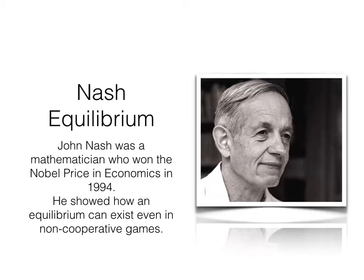Now that you've seen the video clip from A Beautiful Mind, you've seen a pretty inaccurate depiction of John Nash's basic theory. Nash was a mathematician who won the Nobel Prize in 1994, and he did so by showing, using game theory, how an equilibrium can emerge in a non-cooperative game.